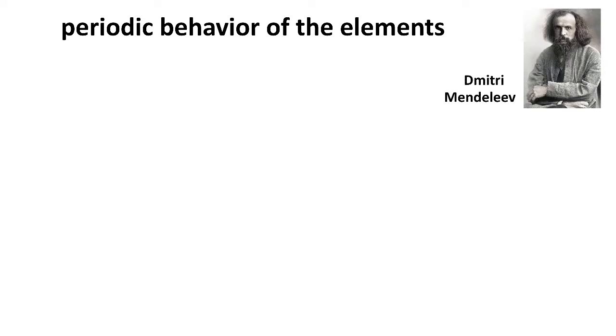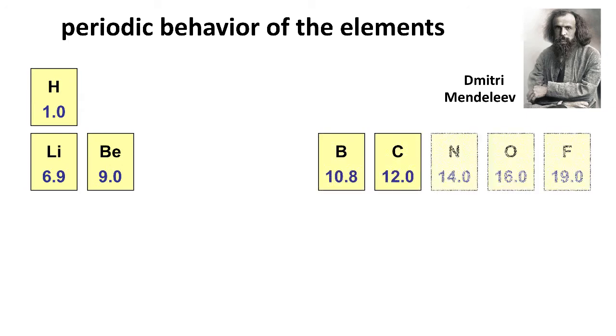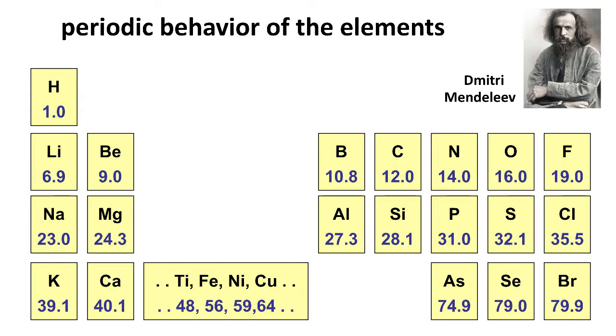Now all kinds of elements have some periodic behavior, some similar behavior among many of the elements, and way back in the 1800s Russian scientist named Dmitry Mendeleev organized the known elements according to their increasing mass and organized them by grouping elements that had similar behavior together.